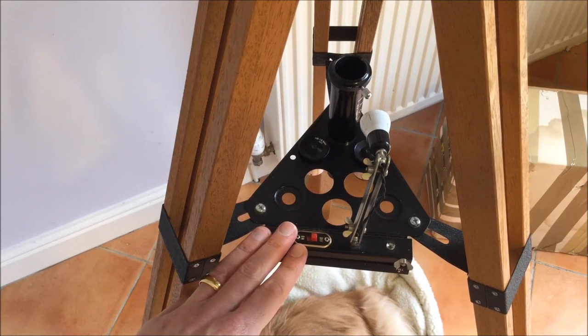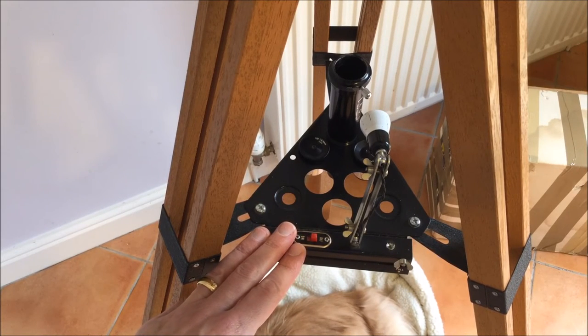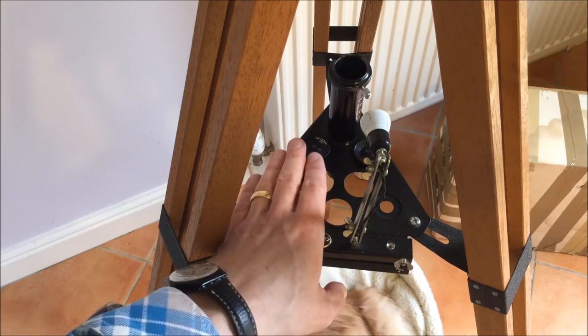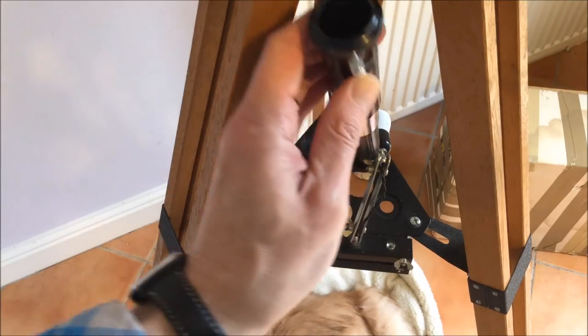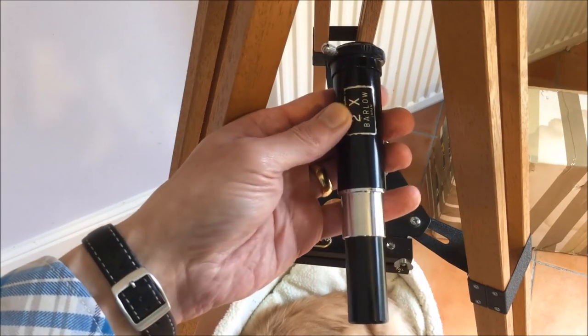Wooden tripod, but you've got to check out this accessory tray. Room for lots of accessories. The eyepieces are here, and you can see that the scope also came with a 2x Barlow.